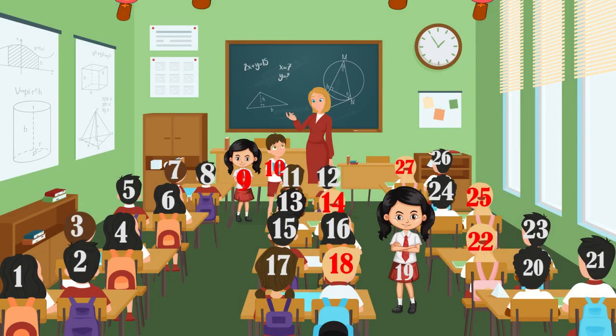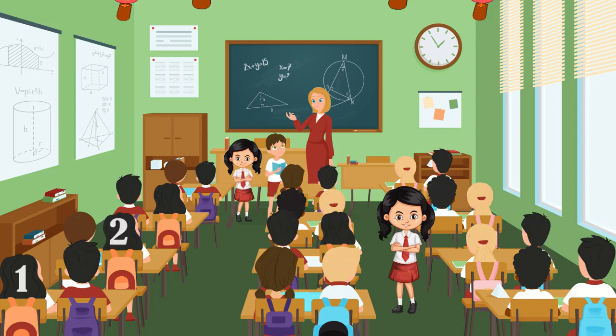Now, let us find out from this 27 how many girls are there and how many are boys. 1, 2, 3, 4, 5, 6, 7, 8, 9, 10, 11, 12. There are 12 girls.